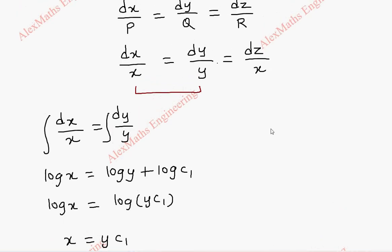Now for the second one, it is better if I group first and last term because we have x here. So if I take the first one, which is dx by x equal to the last one, dz by x.